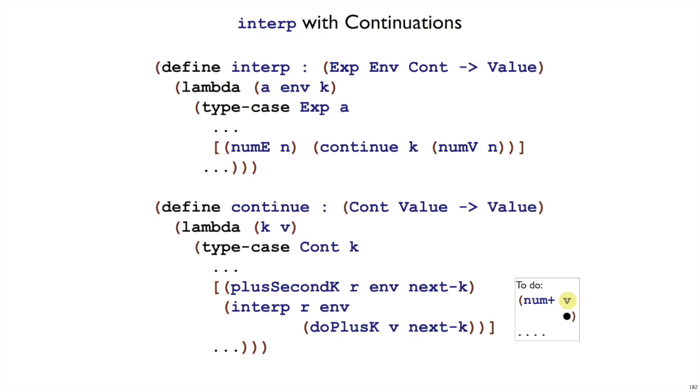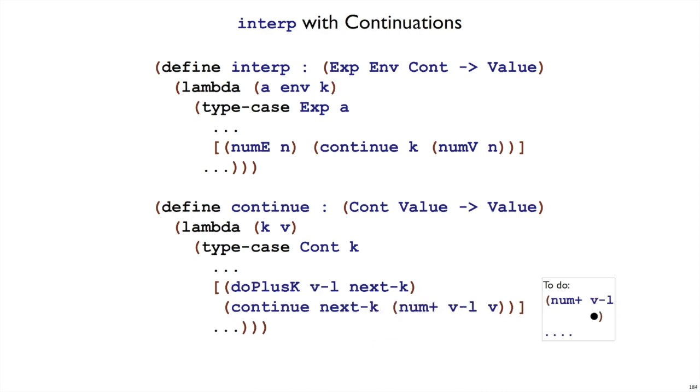So do plus k is recording the value v, it's waiting for a value from the right expression, and we have the rest of the continuation. Eventually the interp of this r will reduce it down to some value, and at that point we're ready to actually perform the plus, so we'll end up in the do plus k case of continue. Let's look at that case.